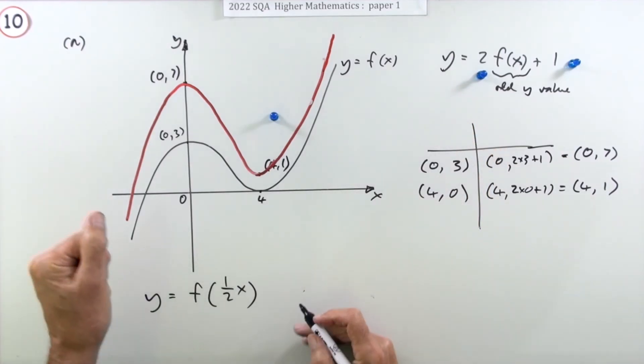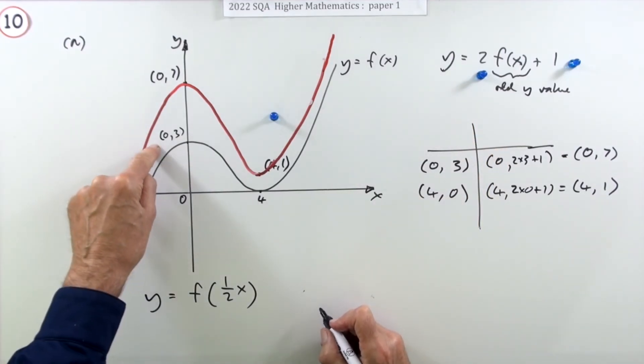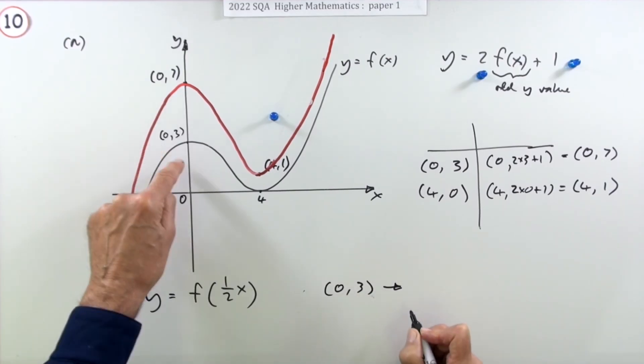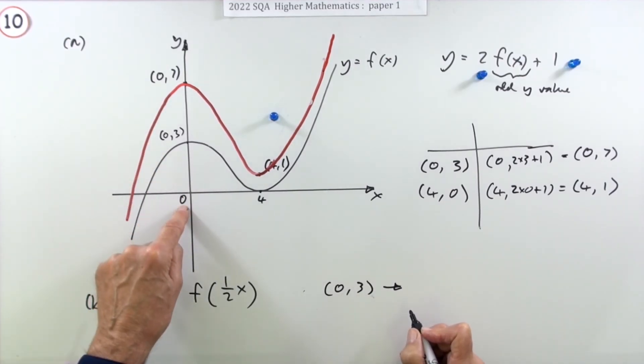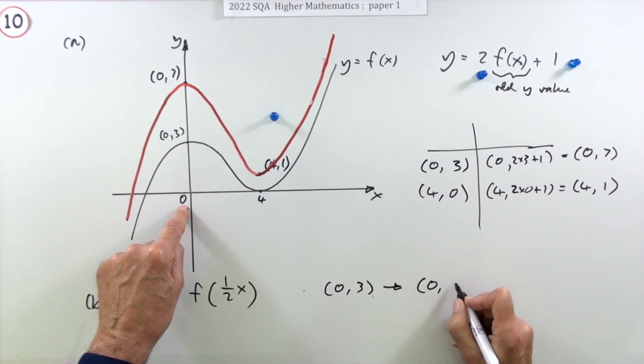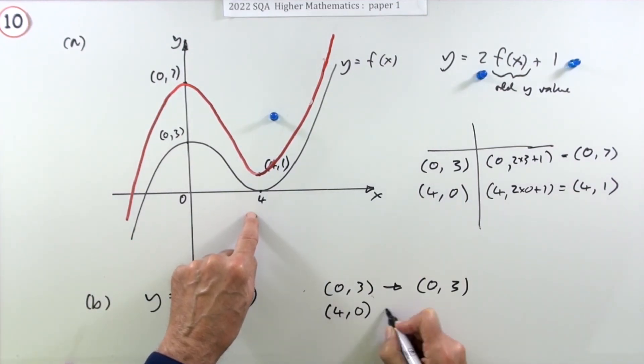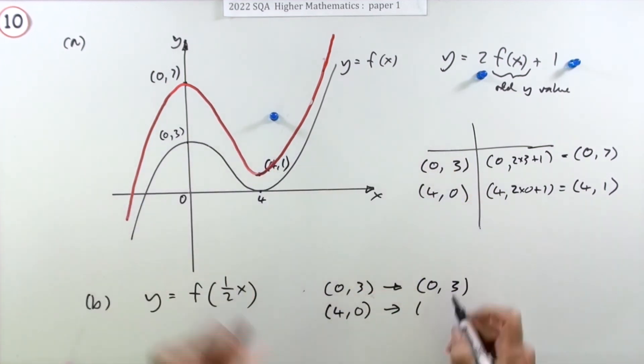So that just says everyone's going to be stretched by two. Well the turning points would be this then. The one that was at zero three, since it's on the y-axis and since x is at zero, that would just stay where it is. The one that's at four zero however will get stretched up to eight zero. Putting those down gets the mark.